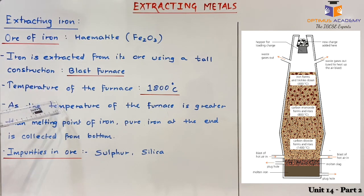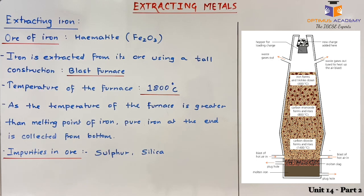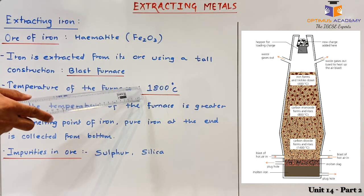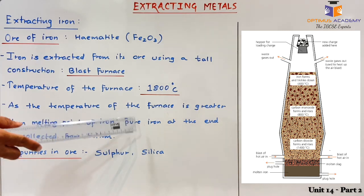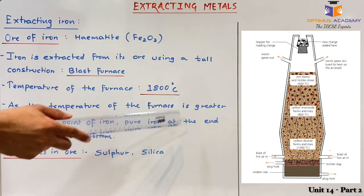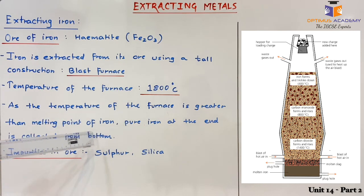The temperature of the furnace reaches to around 1800 degrees Celsius. This temperature is greater than the melting point of iron, and hence the pure iron that we obtain at the end of the procedure is collected in liquid form from the bottom of the furnace.